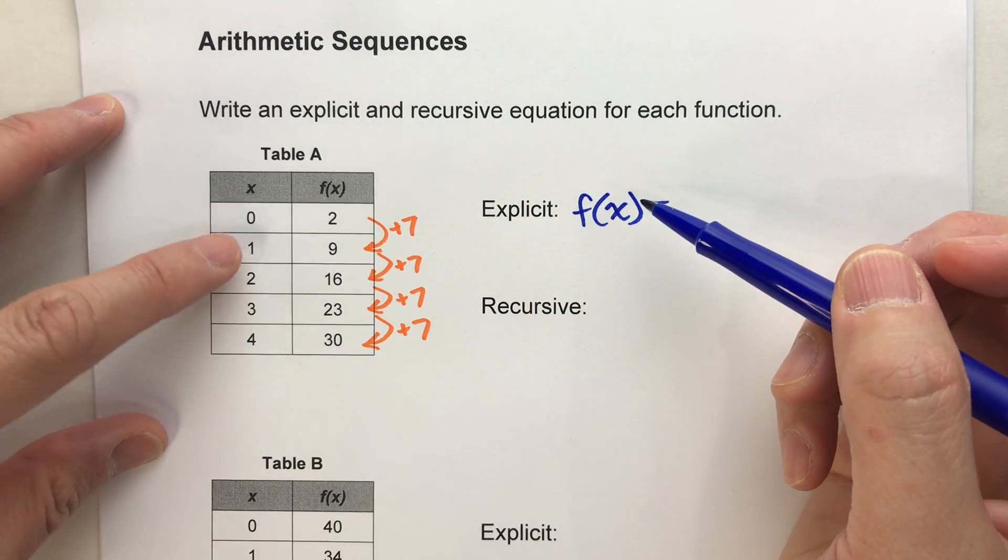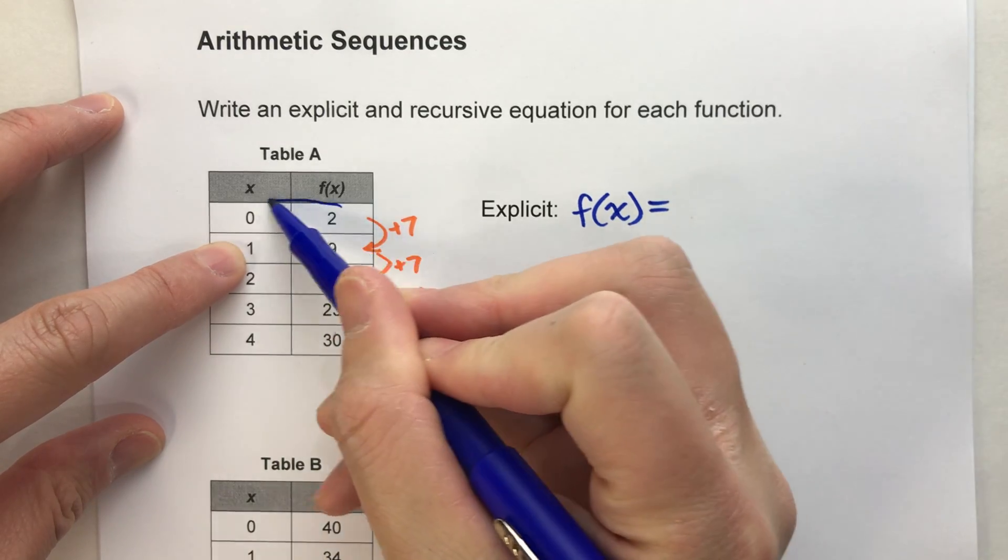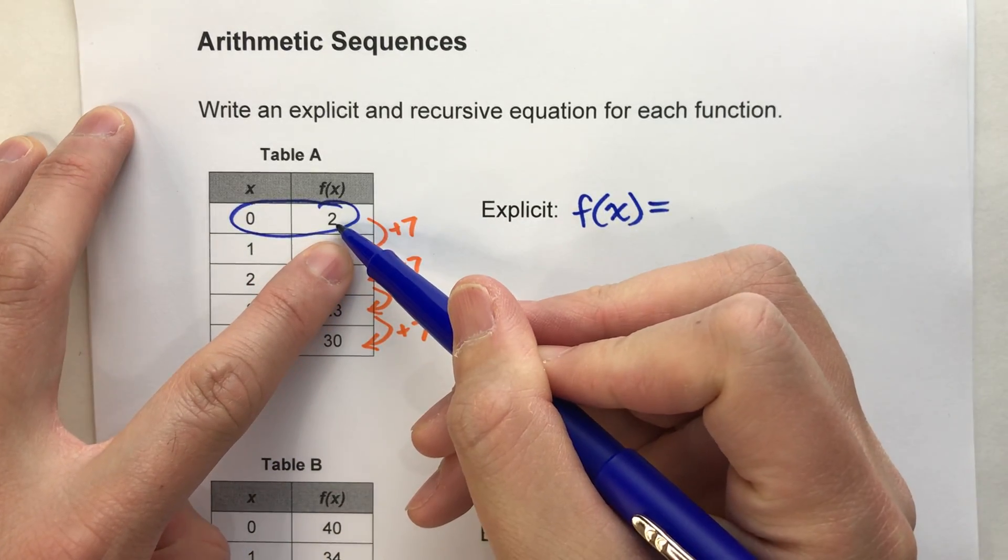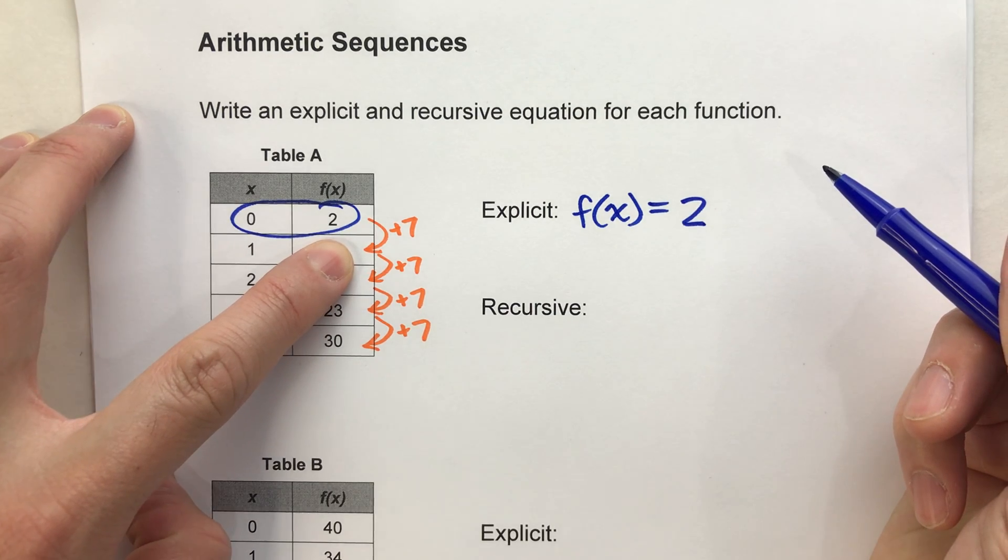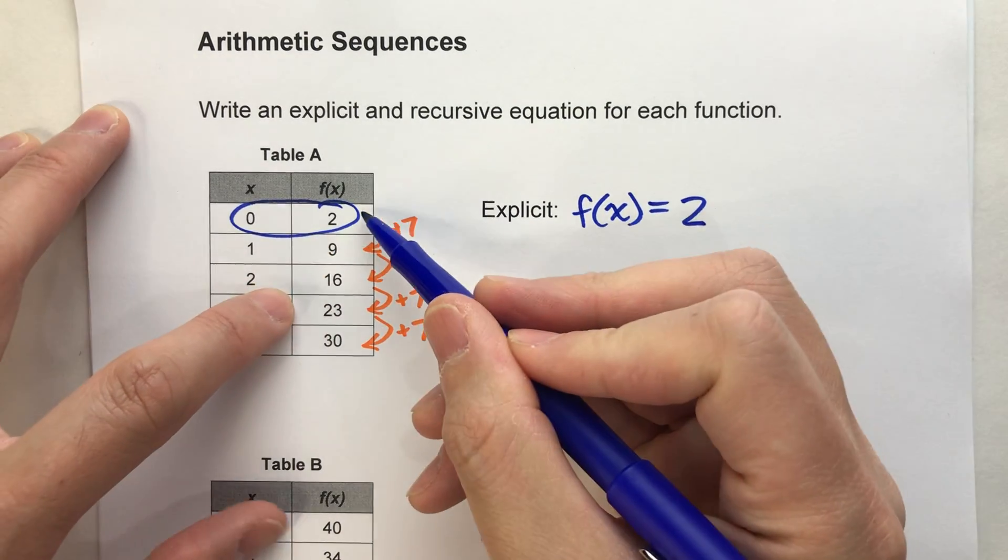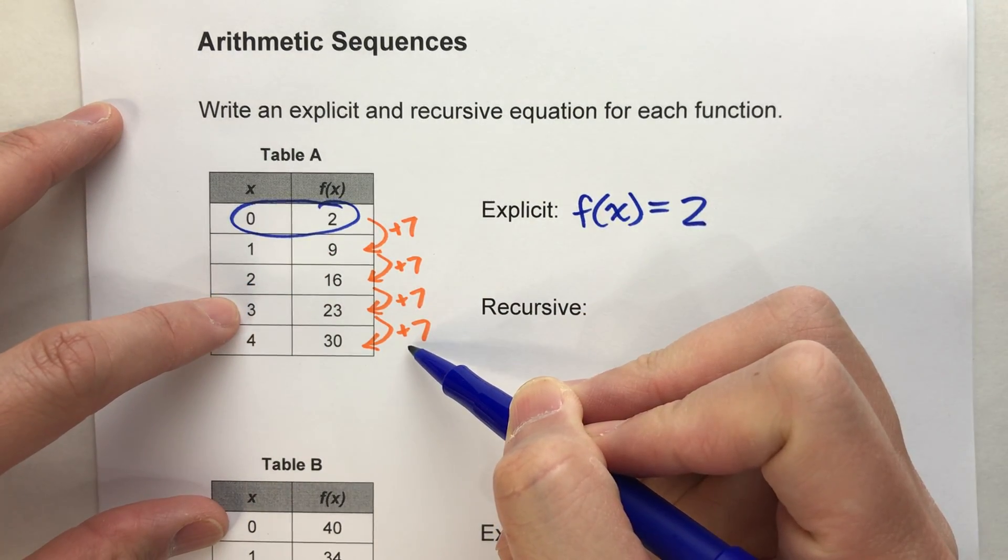What number does the sequence start at when x is 0? In this case, f of x starts at 2. So we'll say f of x equals 2, and then from there we repeatedly add 7 to it.